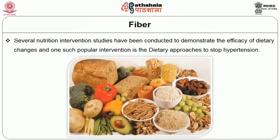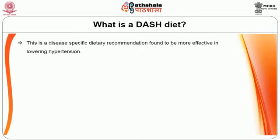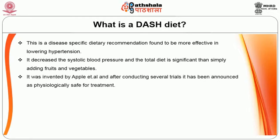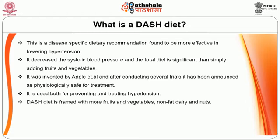Several nutrition intervention studies have been conducted to demonstrate the efficacy of dietary changes, and one such popular intervention is the Dietary Approaches to Stop Hypertension — the DASH diet. This is a disease-specific dietary recommendation found to be more effective in lowering hypertension. It decreases systolic blood pressure, and the total diet approach is more significant than simply adding fruits and vegetables. DASH diet is framed with more fruits and vegetables, non-fat dairy, and nuts.